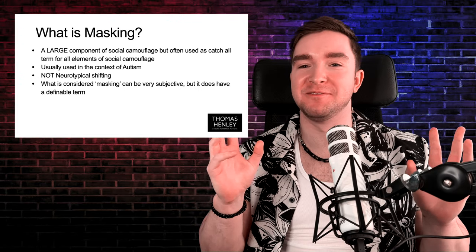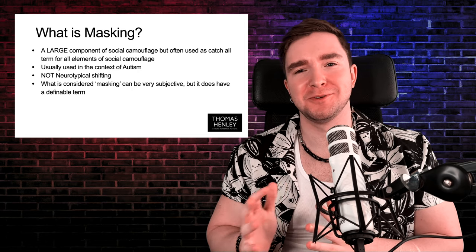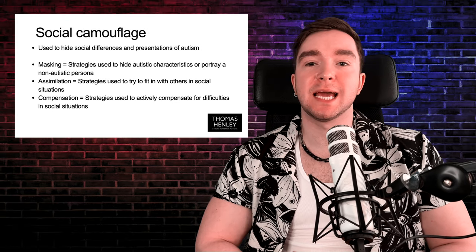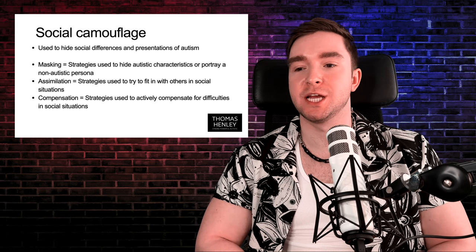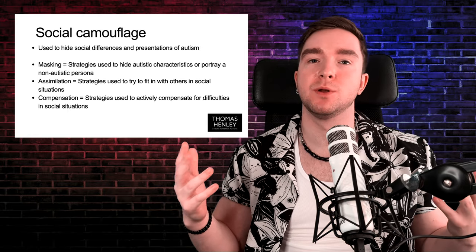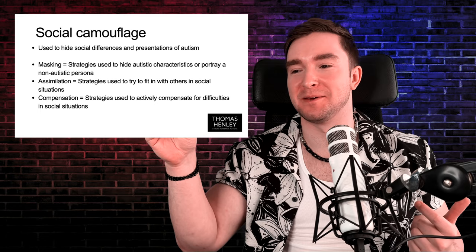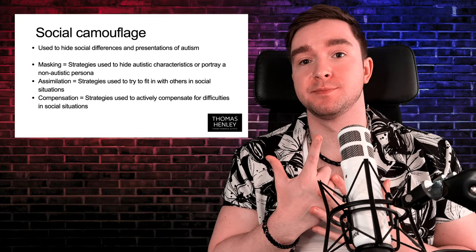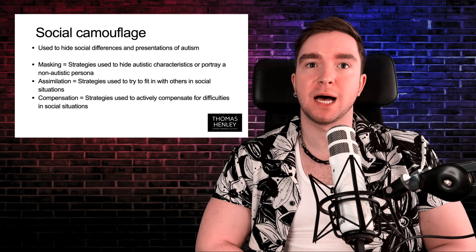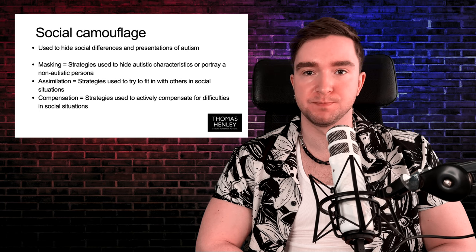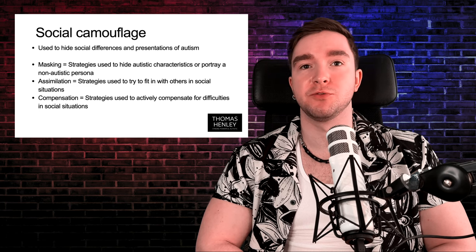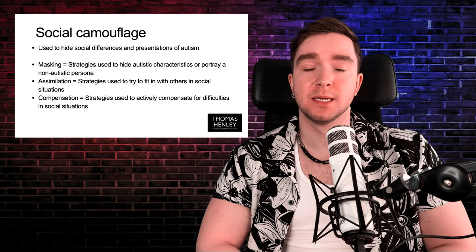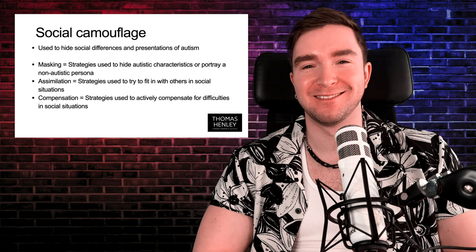What is considered to be masking can be very subjective. Depending on who you talk to, people have different ideas, but it does have a definable term. When we talk about masking, we're generally talking about social camouflage in its entirety — an umbrella term covering three different elements: masking, assimilation, and compensation. It's used primarily to hide the social differences and presentations of autism.